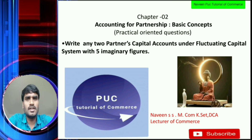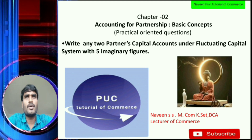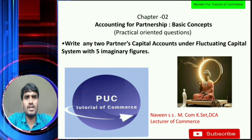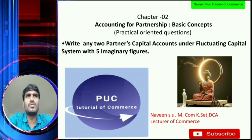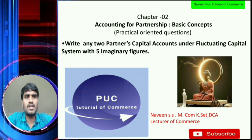In this chapter, there are three questions. First, Profit and Loss Appropriation Account, Fixed Capital System. Next, Fluctuating Capital System. Section E: Practical Oriented Questions.